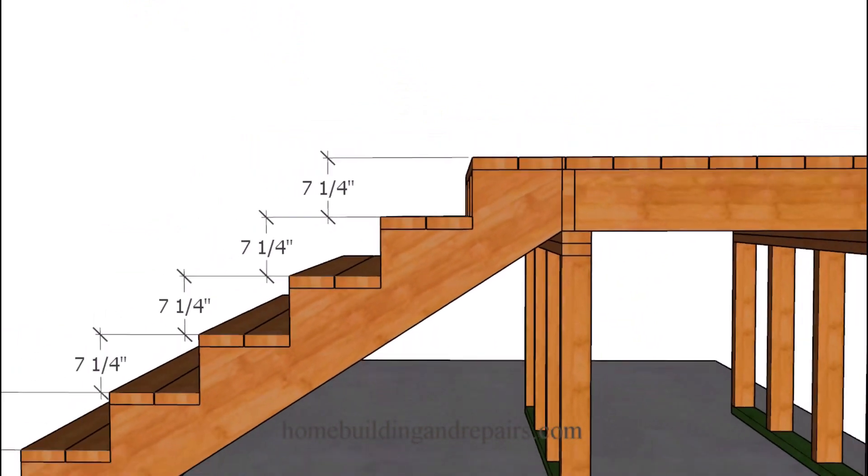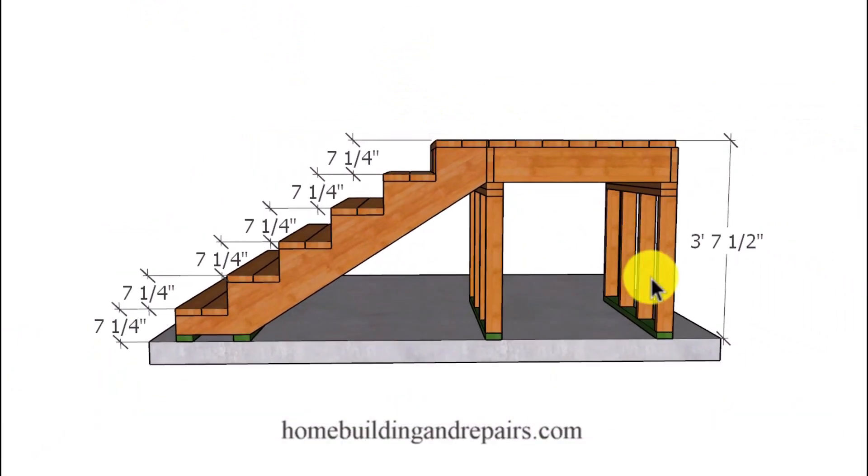And again, to find the total rise of your stairway, you're simply going to measure from the lower level to the upper level, and then divide the amount of risers you have into that number.